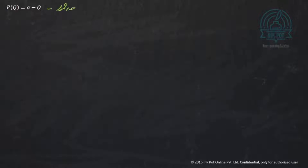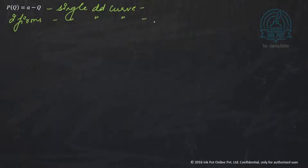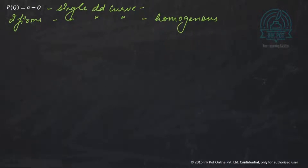We're given an example where P is equal to A minus Q. Notice how this is only a single demand curve. When we have two firms sharing a single demand curve, it implies the product is homogeneous. Because if the product were differentiated, there could be different prices and two separate demand curves, one belonging to each firm. Right now, we have a single demand curve which is the overall demand curve for the industry.